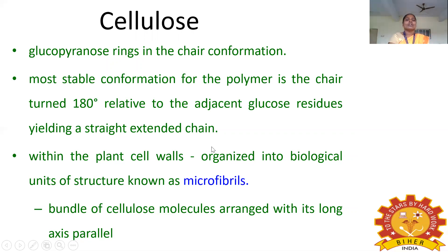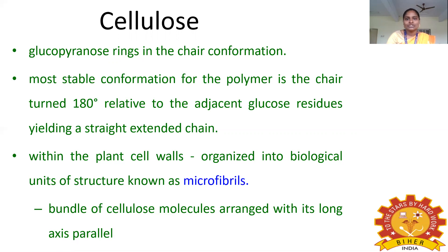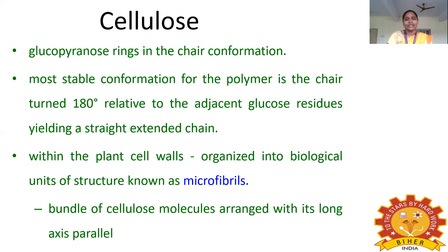In summary, carbohydrates are classified into three types: monosaccharides (simple sugars), oligosaccharides (containing 2 to 10 monosaccharides), and polysaccharides (containing more than 10 monosaccharides). Monosaccharides cannot be hydrolyzed, while oligosaccharides and polysaccharides can be hydrolyzed by enzymes or acids. Thank you.